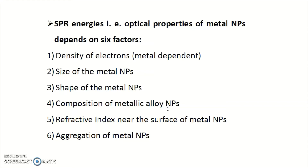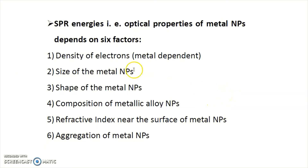The sixth is the aggregation of metal nanoparticles. Suppose we consider two cases: if the metal nanoparticles are individual and if they aggregate, then due to aggregation, there is a change in the color of the metal nanoparticles. All these parameters basically affect the optical properties of metal nanoparticles.